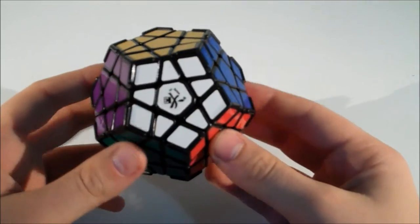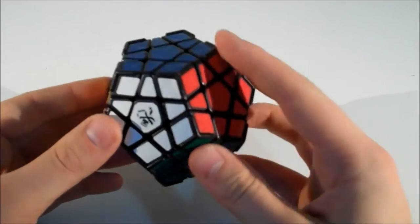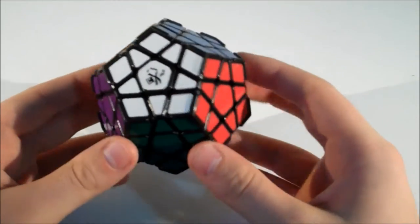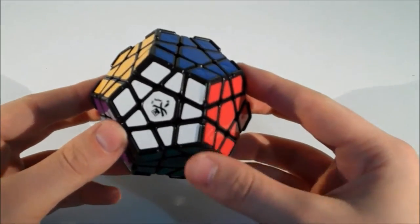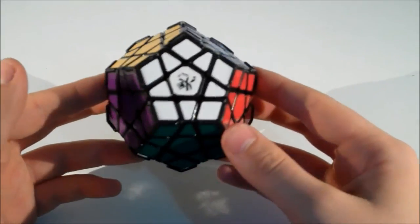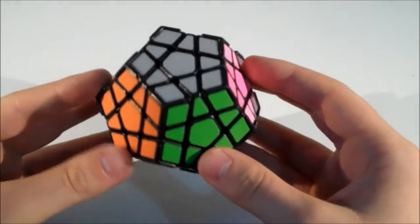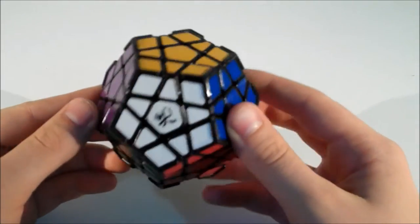I really like this color scheme. I think it contrasts really well when the puzzle is scrambled and it looks really nice. As usual, the Dian stickers are really nice quality—no chipping, peeling, or fading—and they are really nice shades, a lot nicer than the dull 3x3 Dian stickers.